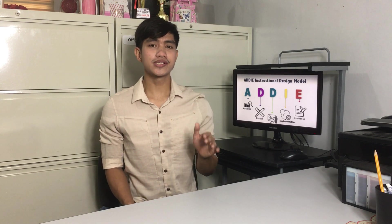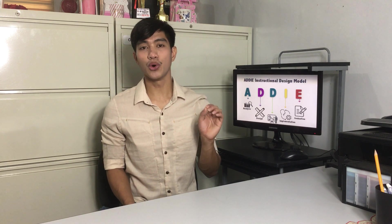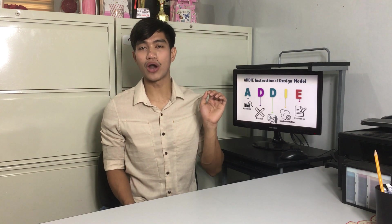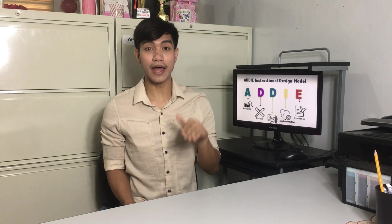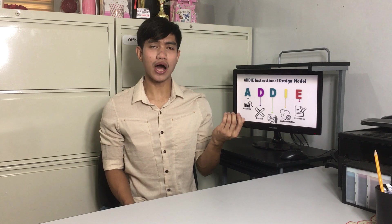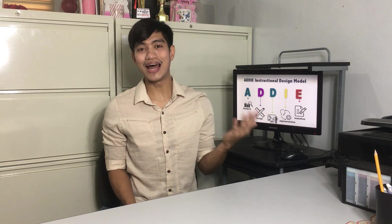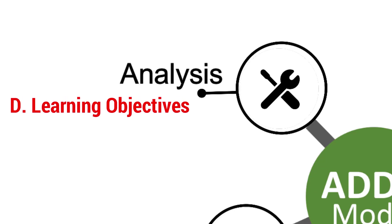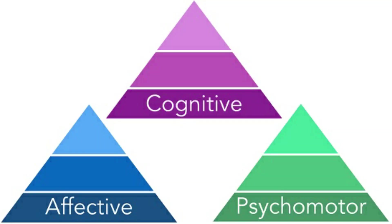Knowing where your learners stand regarding your subject helps you know how much or how little you need to teach them. It's important for educators to know their students well to create a well-balanced and structured instruction. Step four is creating learning objectives. Learning objectives are what students should be able to do when instruction is completed. They are usually in the form of knowledge, skills, and attitudes — the three domains of learning.